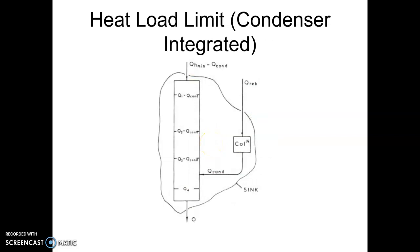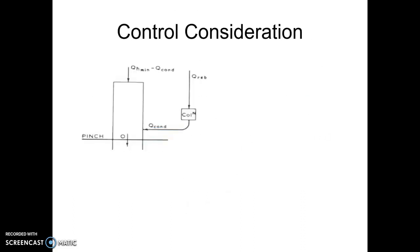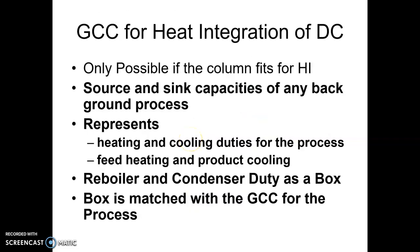This can also be seen as follows: Q condenser in this particular case should not be so high that Q1 minus Q condenser, Q2 minus Q condenser, or Q3 minus Q condenser becomes less than or equal to zero, since zero is only allowed at the pinch point. In the same way, below the pinch, if you integrate with the reboiler, the reboiler duty should not be so high that any interval becomes zero or less than zero. When we meet next time, we will be talking about how the Grand Composite Curve (GCC) should help us in integrating the distillation column, and how we know the amount which can be exchanged between the process and distillation column with the help of GCC.